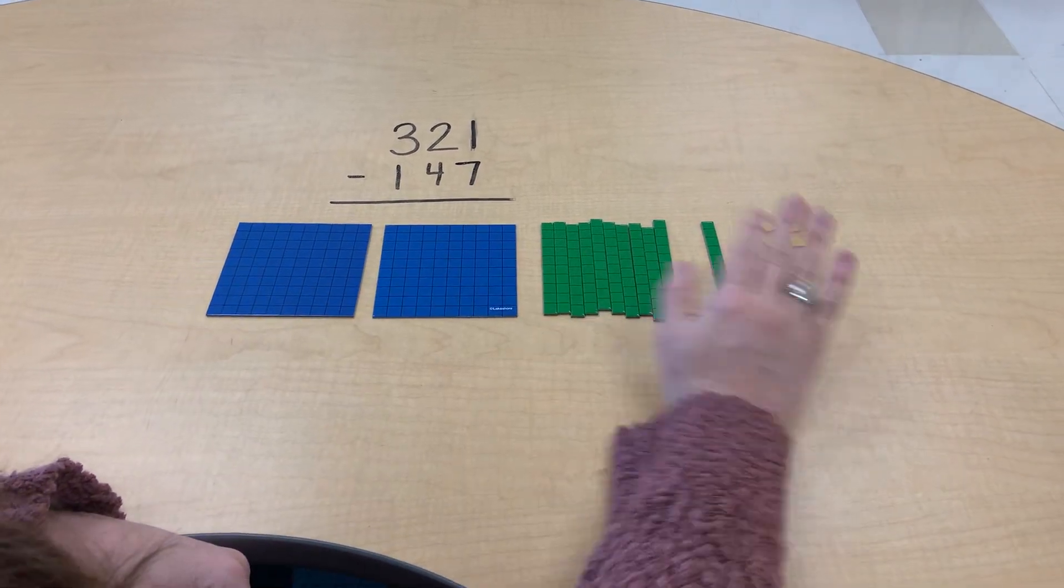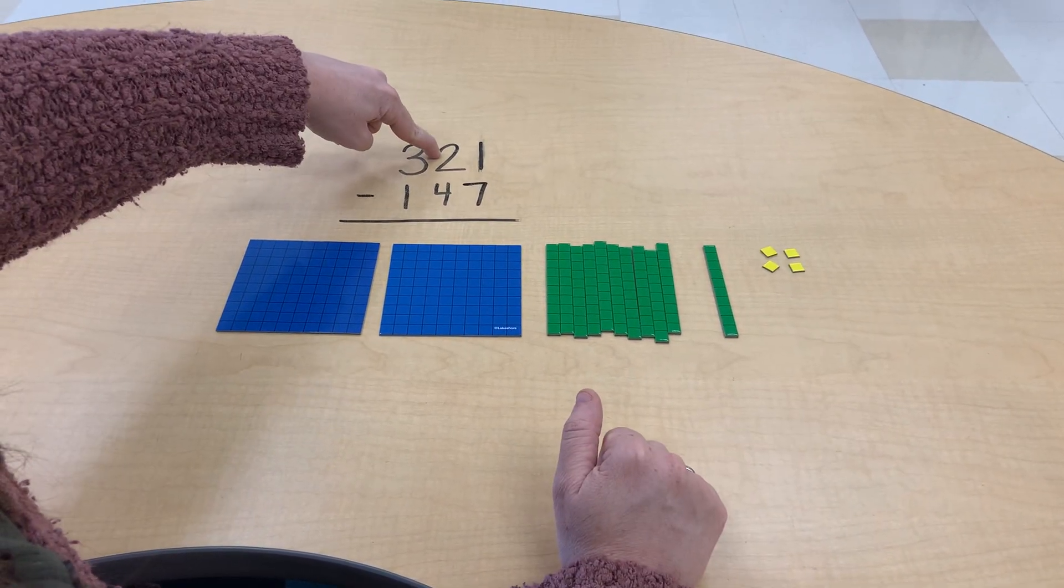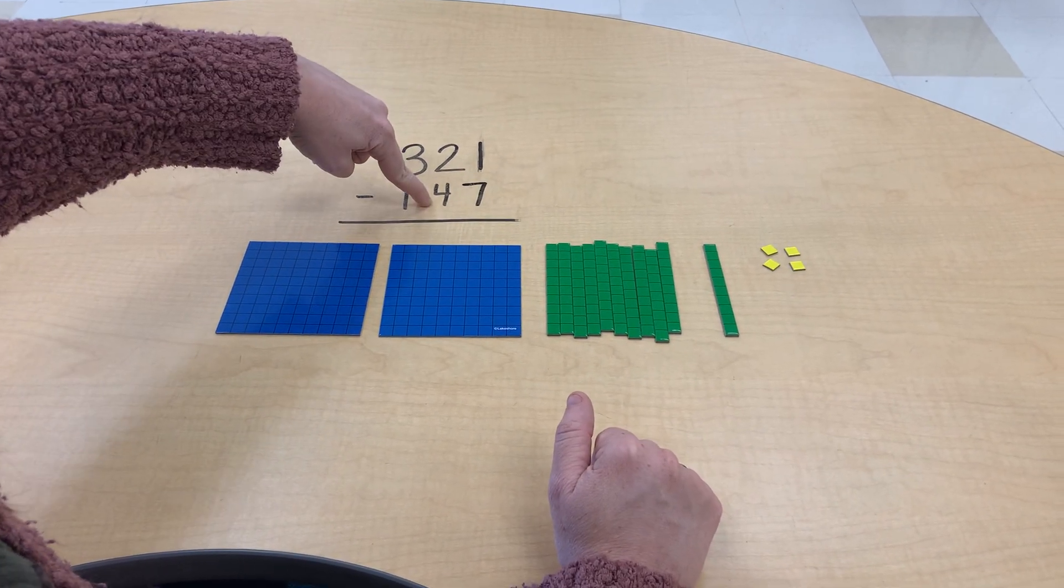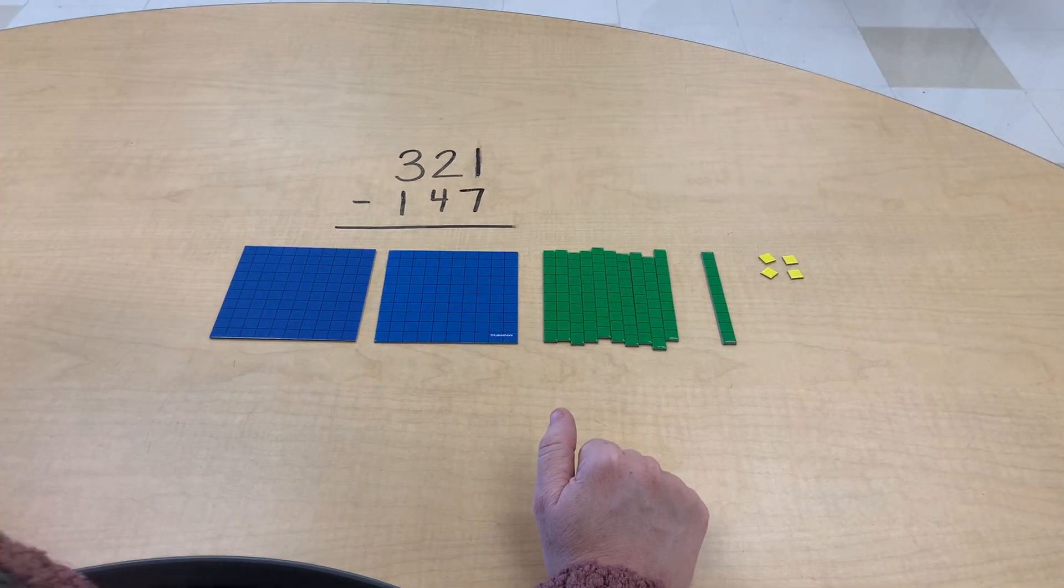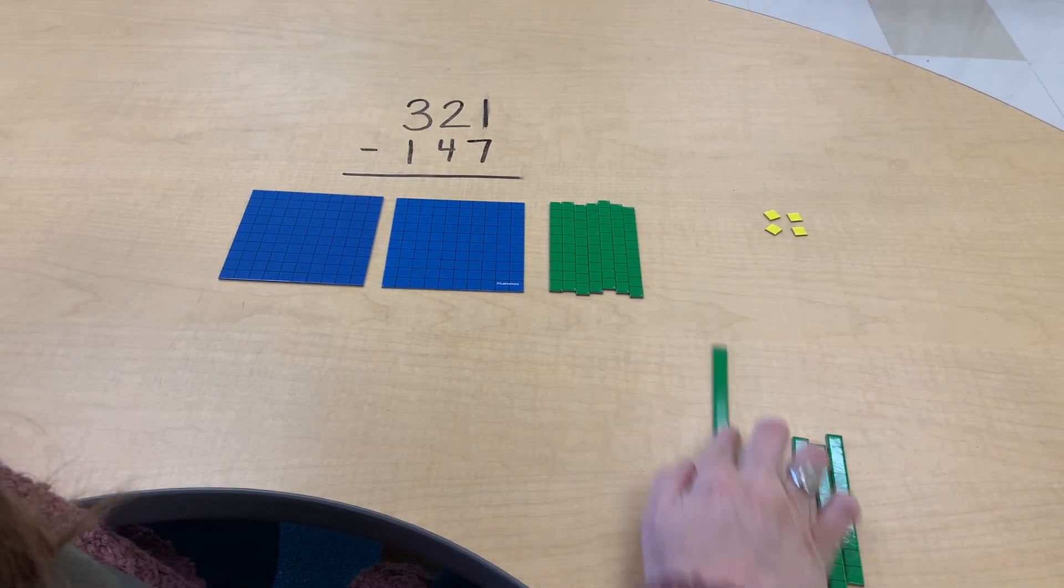So again, I still have my number here. I have taken away from the ones. So now I'm going to take away four tens. One, two, three, four.